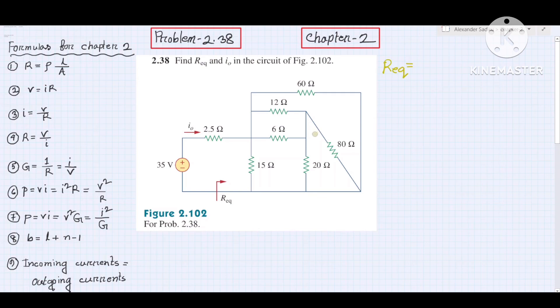So here we have 80 ohm and 20 ohm together in parallel. Then 6 ohm and 12 ohm are in parallel as well. So 12 ohm and 6 ohm in parallel.